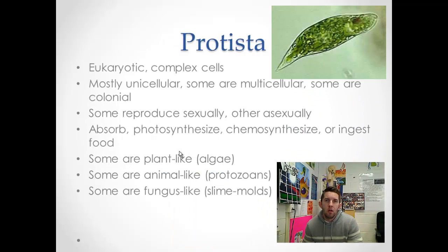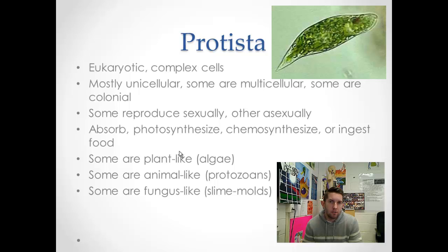The protists are a very diverse kingdom. It's possible that in the near future, the kingdom protista could be broken up into upwards of five kingdoms — there are five proposed candidate kingdoms. They're eukaryotic, with a true nucleus in organelles and complex cells. Most of them are unicellular and aquatic, though some are multicellular and colonial, such as algae. They can reproduce sexually and asexually. Their metabolism shows extreme diversity: they can absorb or ingest food, so some are heterotrophic and some are autotrophic, able to photosynthesize or chemosynthesize using chemicals.